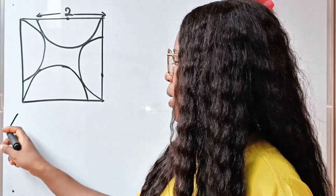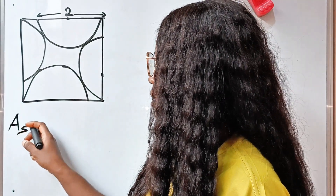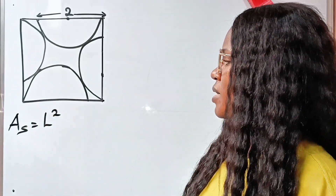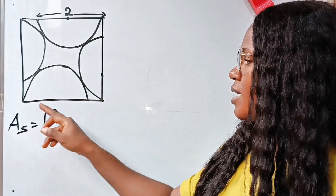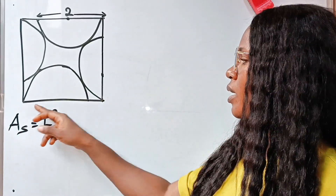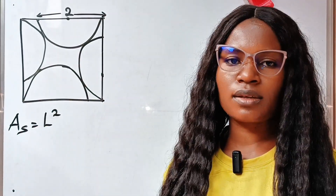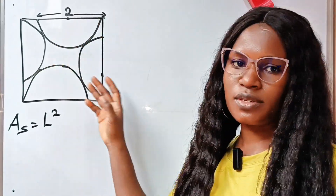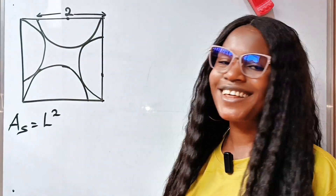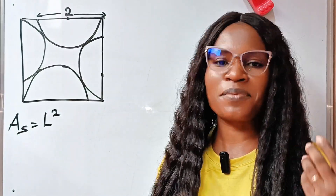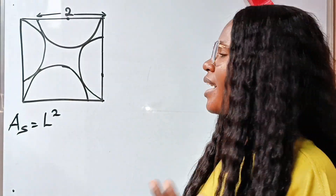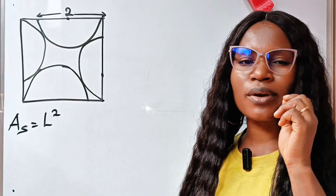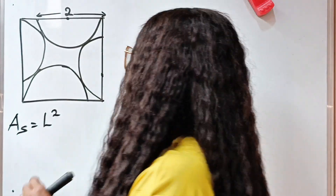First of all, the area of a square is equal to length squared. So it simply means that if we can get the length of one side of this particular square, we are going to square the length to get the area of the square. That is where the problem lies — how do we get the length of this square? There is a theorem that is going to help us.